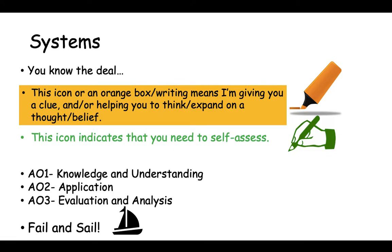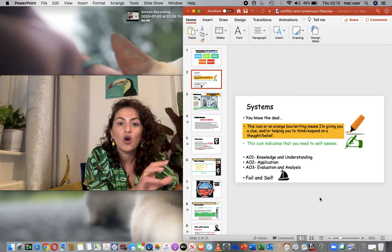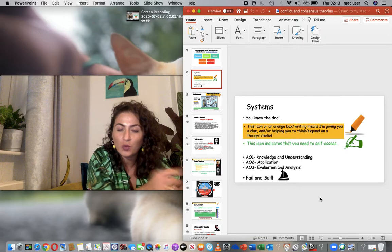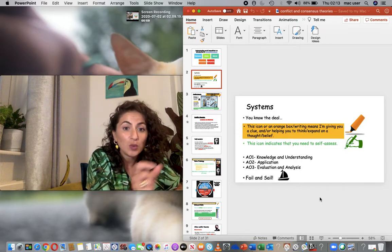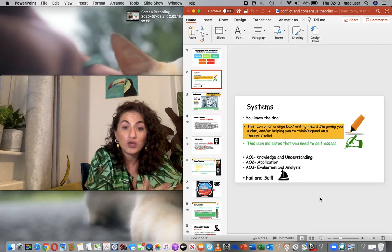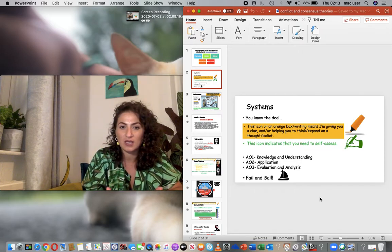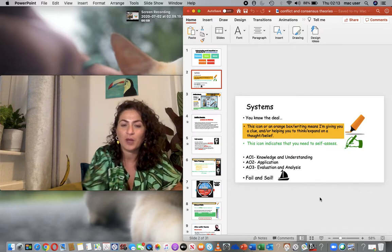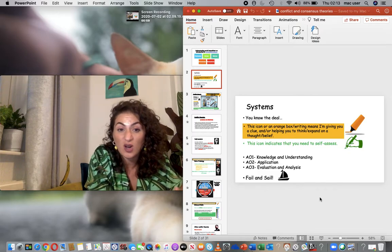AO1 covers your basic concepts, theories, and sociologists. Your AO2 is application — this is where you put your studies into context. Your AO3 is evaluation and analysis. I want you to write AO1, AO2, and AO3 in the margin of your piece of paper where you'd normally write classwork or homework, to indicate where you think you'll be getting those marks.